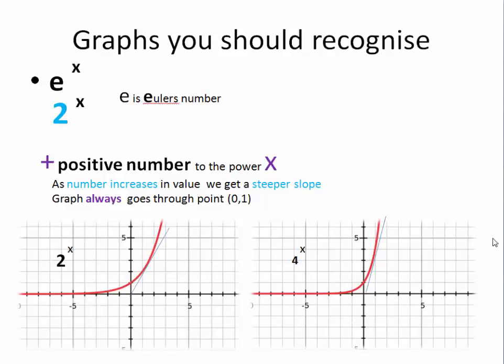Here we have e to the x. E is Euler's number, which is two point something. And two to the x, or a to the x, a positive number to the power x. These graphs again look similar. They always go through the point zero, one. And then rise steeply. The greater the number, two, three, four, five to the power x, the steeper the slope after the zero, one. And between this negative x and y axis. So this slope becomes steeper. And this slope becomes steeper.